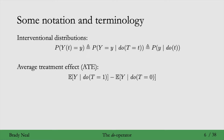Note that we can write the average treatment effect as this difference when we're using do notation. And importantly, this is just the difference between the first moment of two different interventional distributions. The two different interventional distributions are p of y given do t equals 1, and p of y given do t equals 0. And for both of those distributions, we're just taking the average over y. Then taking a difference between those two — that's what the ATE is.